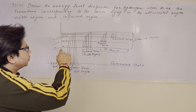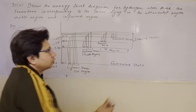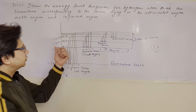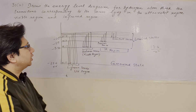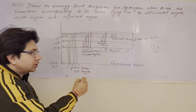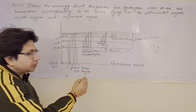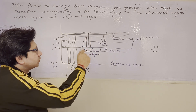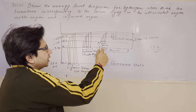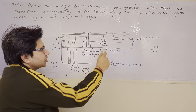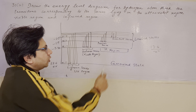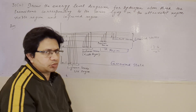The energy values are minus 3.4 and minus 1.5 electron volts, and so on. Accordingly, we can put these values in the diagram. When the transition is from a higher state to n equals to 1, we get the Lyman series, corresponding to the UV region. Transition to n equals to 2 gives the Balmer series. Transition to n equals to 3 gives the Paschen series. Transition to n equals to 4 gives the Brackett series. The Brackett and Paschen series correspond to the IR region.